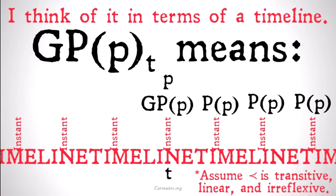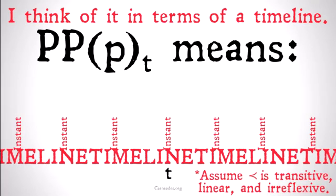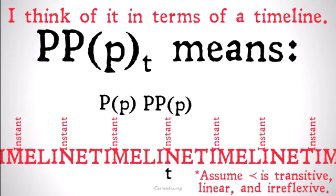PPPt — it was at some point in the past the case that it was at some point in the past that p was true, from now at instant t. So we have PPP true right now at instant t. It means that past-P — so p was true at some point in the past — is the case at some instant before now, and then at some instant before that instant, p was true. Remembering our properties of precedence, it means that p isn't necessarily true at the instant right before now, but it's true at some instant before some instant before now.